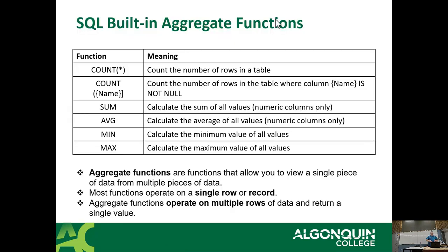Aggregate functions are functions that let you view a single piece of data for multiple rows of data, or multiple pieces of data, depending on how you want to do it. Most functions operate on a single record — so a string function operates on a single column from a single row. An aggregate function operates on multiple rows and returns a single value. How many of you have used math functions in Excel? Sum, average, count — sounds familiar.